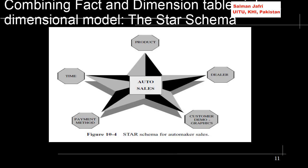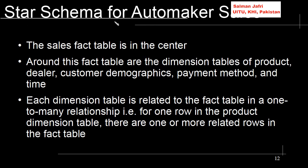So when we want to combine the fact and dimension tables into a dimensional model, one of the very prime schemas we can have is the star schema. The star schema is actually very intuitive and very simple. We have the fact table in the middle, and all the dimension tables — product, dealer, customer demographics, payment method, time — are at the spokes of the star that is created, hence the term star schema. For the automaker sales example, the sales fact table is in the center, around which are the dimension tables of product, dealer, customer demographics, payment method, and time.